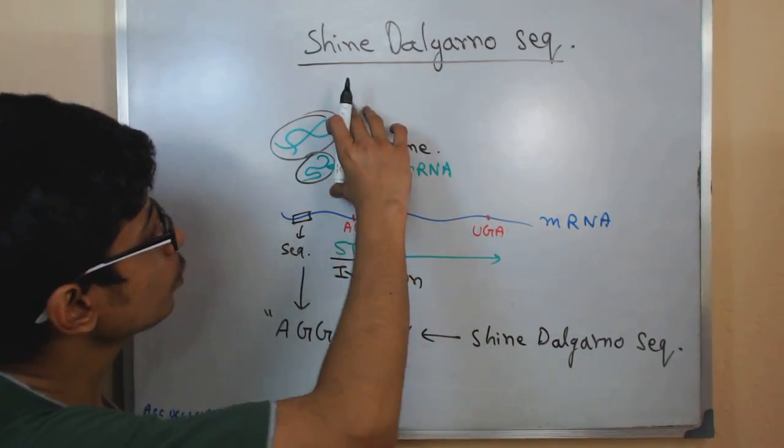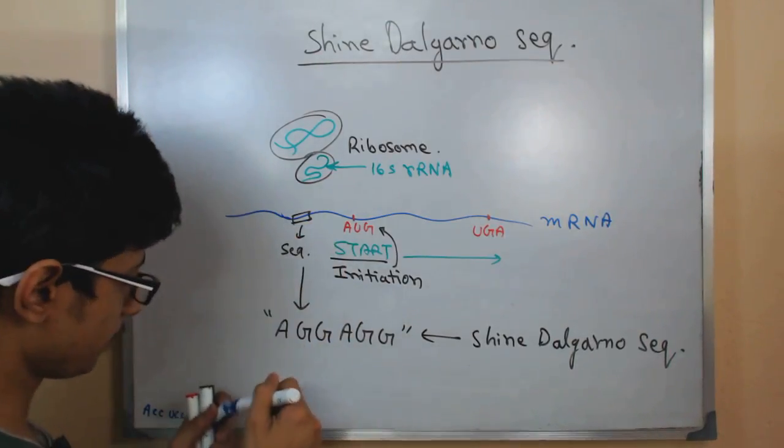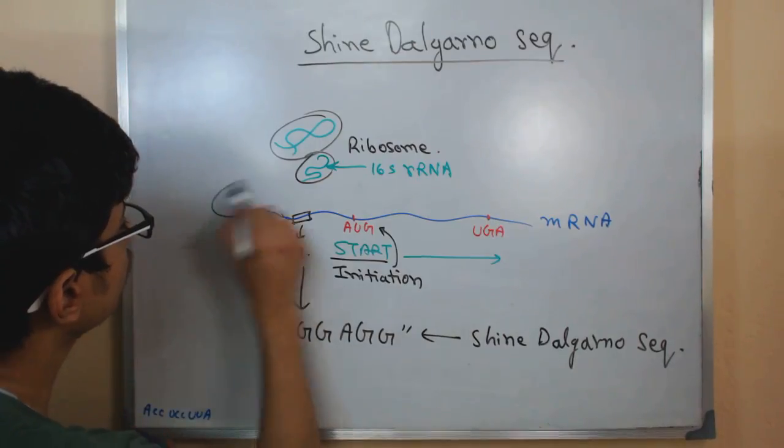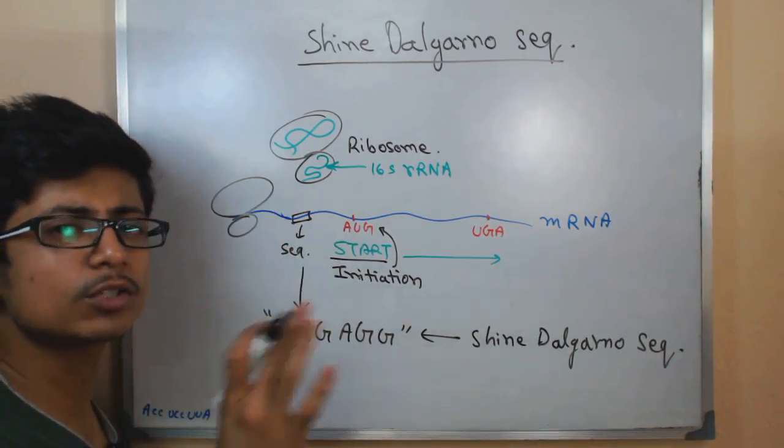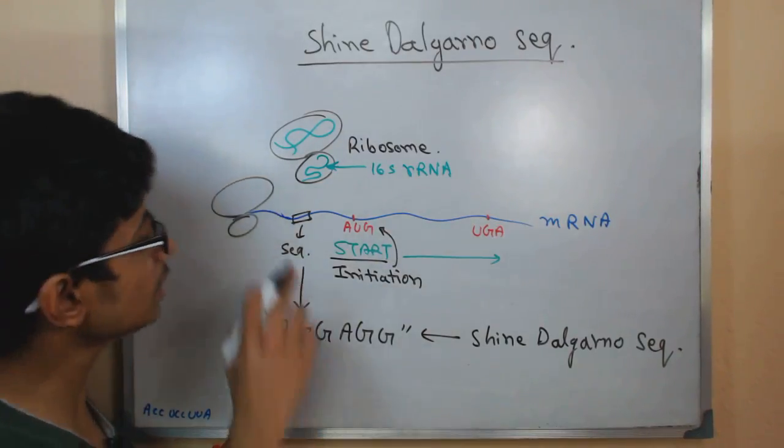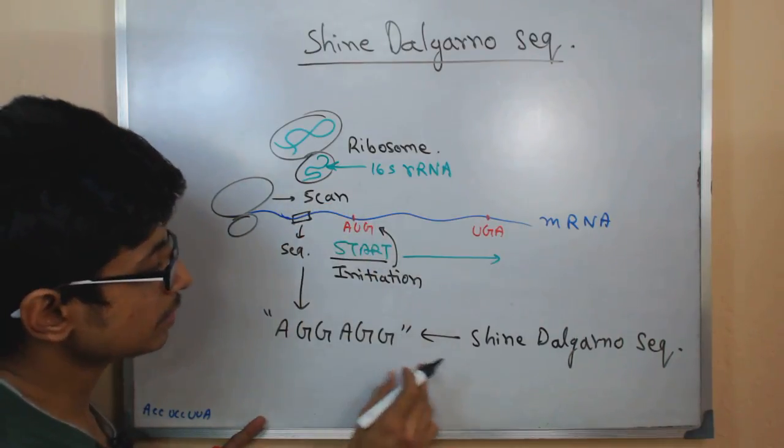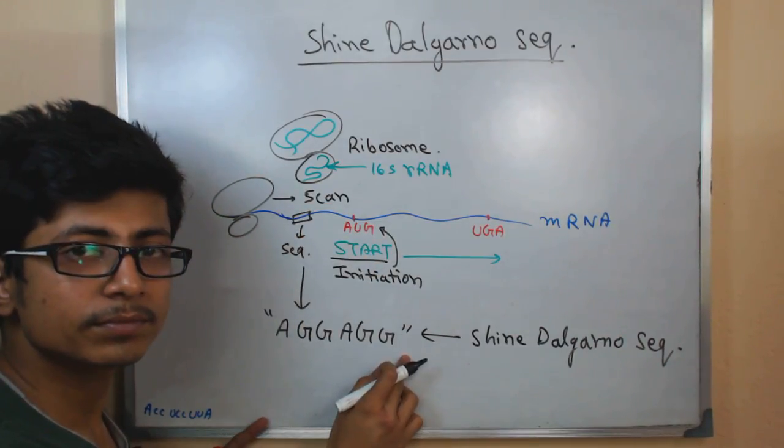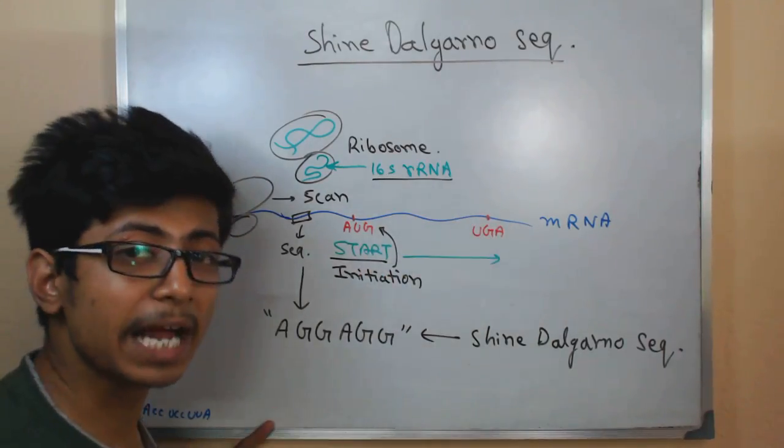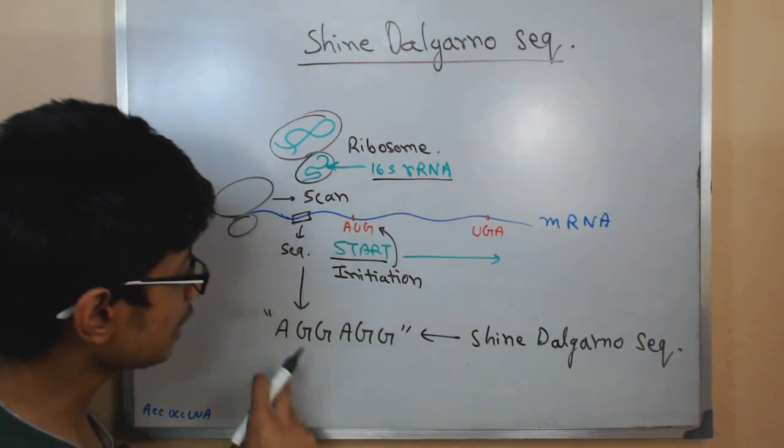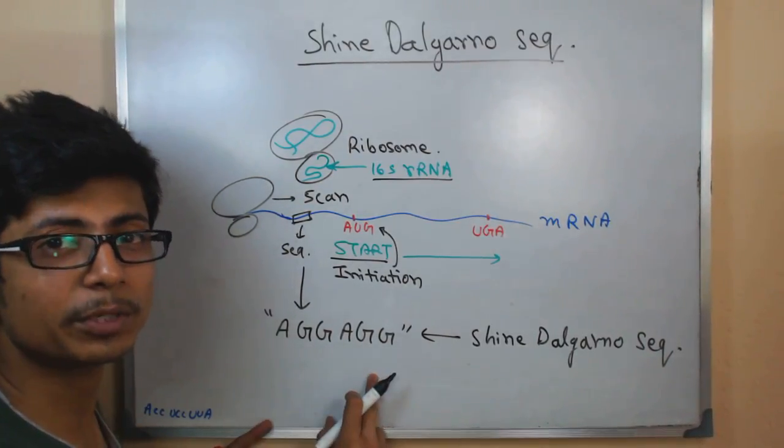So ribosome will come and bring itself, and ribosome is now at the early stage, at a place where there is no start codon, just ribosome is sitting. Ribosome will scan for this sequence because in the 16S rRNA of that ribosome, it consists a complementary sequence of this Shine-Dalgarno sequence.